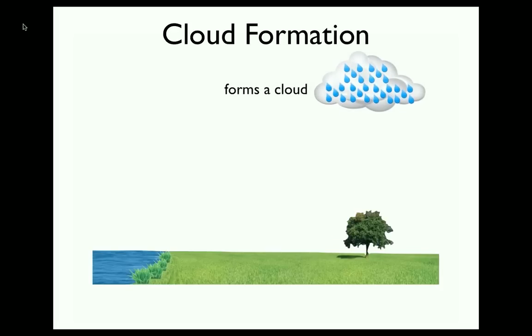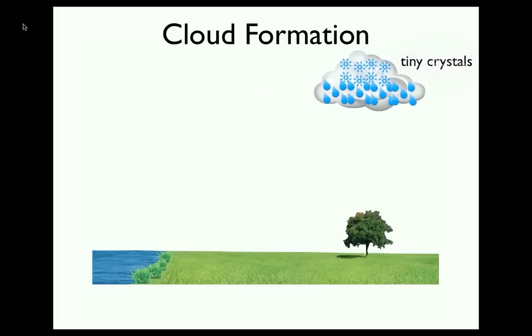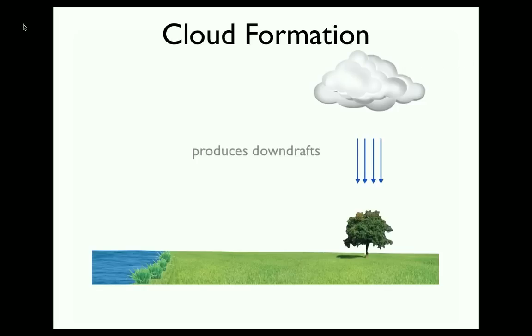At high altitude, the air temperature is well below freezing, so the upper portion of the cloud is composed of tiny ice crystals. Eventually, the raindrops and ice crystals get large enough that they fall through the cloud, dragging some of the air from the cloud downward, which produces downdrafts.